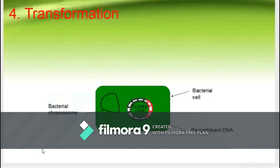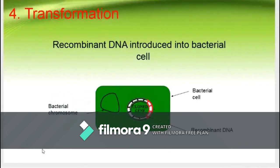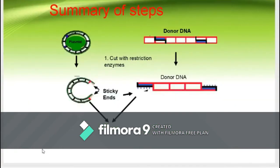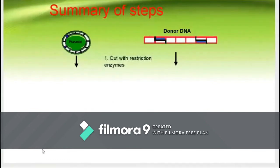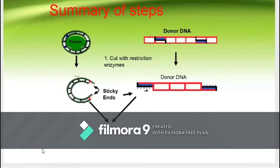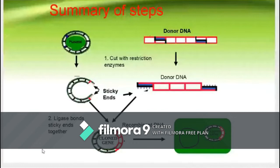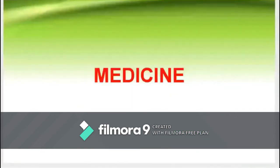After ligation, the plasmid with the recombinant DNA is introduced into a bacterial cell, making a total transformation of the bacterial cell. After the bacterium reproduces through binary fission, the newly produced bacterial cells now contain the genes coded for by the donor DNA. To put simply, genetic engineering is an area of molecular biology that involves manipulating the structure of genetic material, while recombinant DNA is a strand of DNA that has been manipulated, isolated, cut, or inserted through the process of genetic engineering.